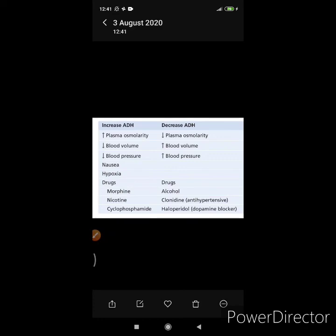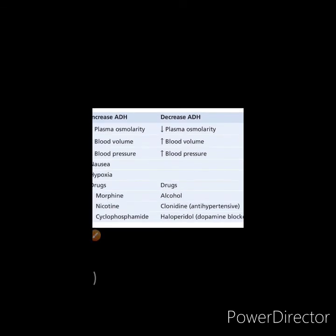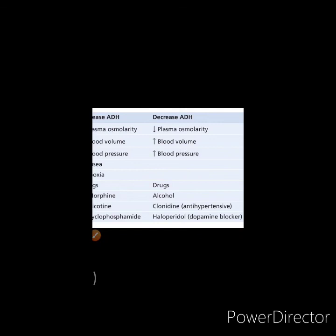Factors that decrease ADH: decreased plasma osmolarity, increased blood volume, and increased blood pressure. Drugs like alcohol, clonidine (which is antihypertensive), and haloperidol (which is antipsychotic) decrease the level of ADH. The diuresis that occurs after ingestion of alcohol is because of inhibition of ADH.